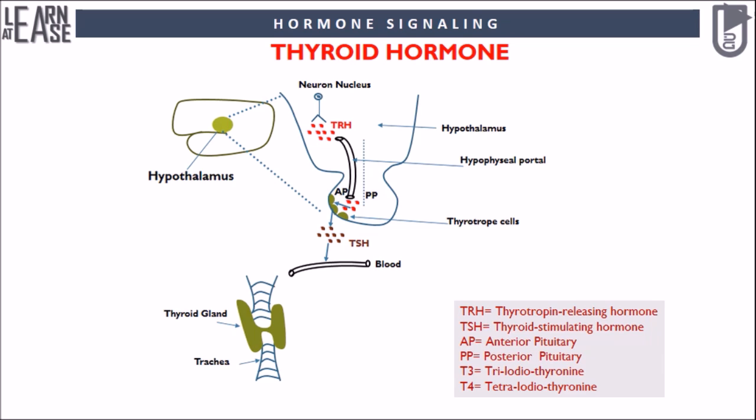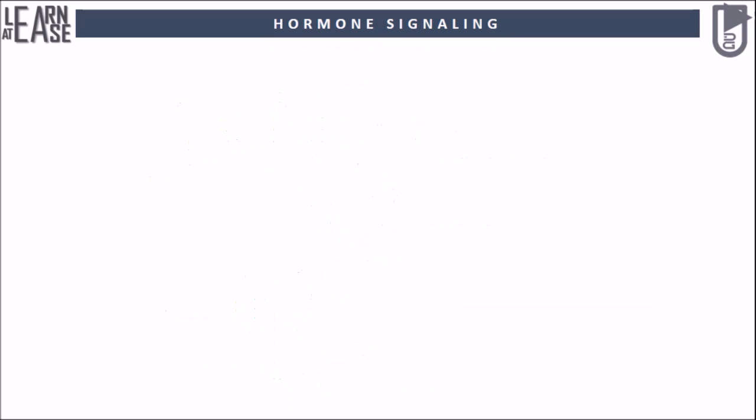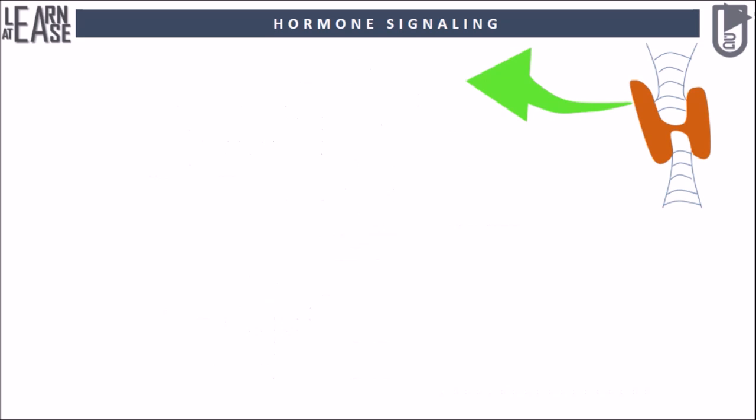The TSH circulating in blood reaches the thyroid gland and activates this endocrine gland, which will produce triiodothyronine and thyroxine, abbreviated as T3 and T4 respectively. The mechanism by which T3 and T4 are produced by the thyroid gland is remarkable.